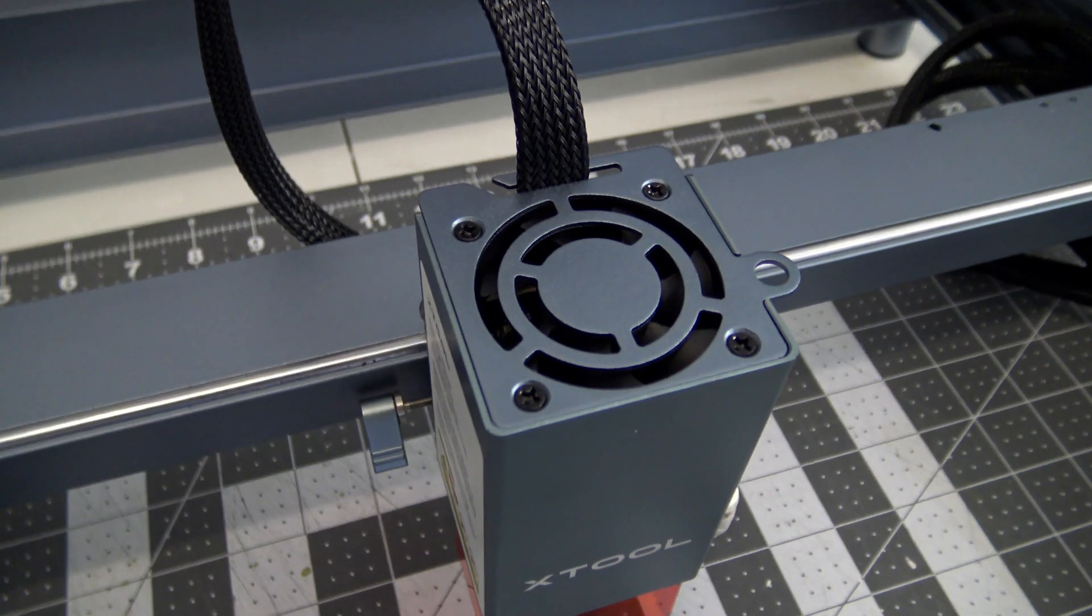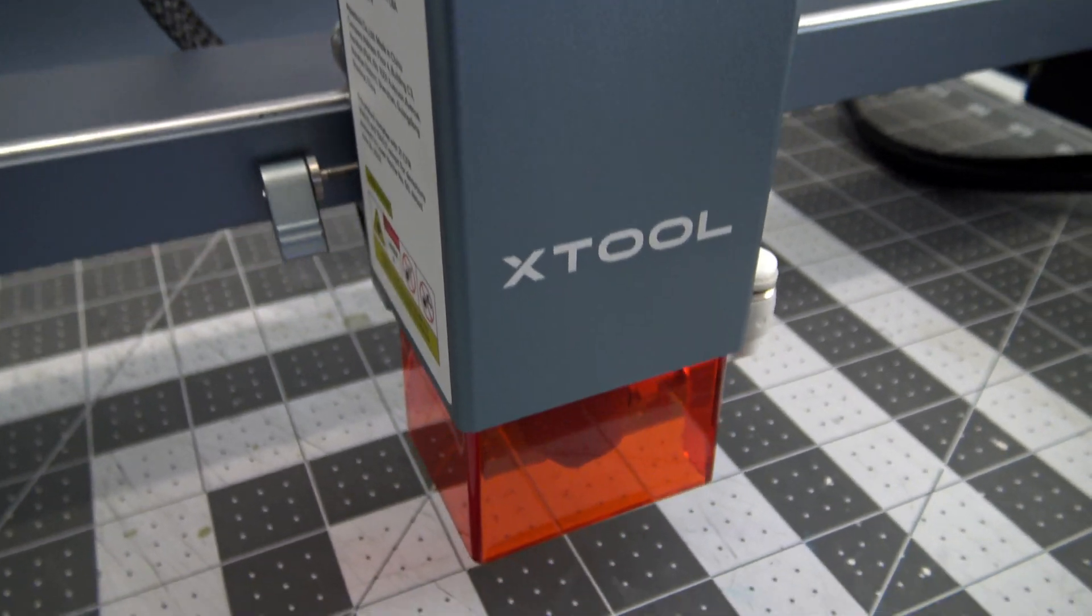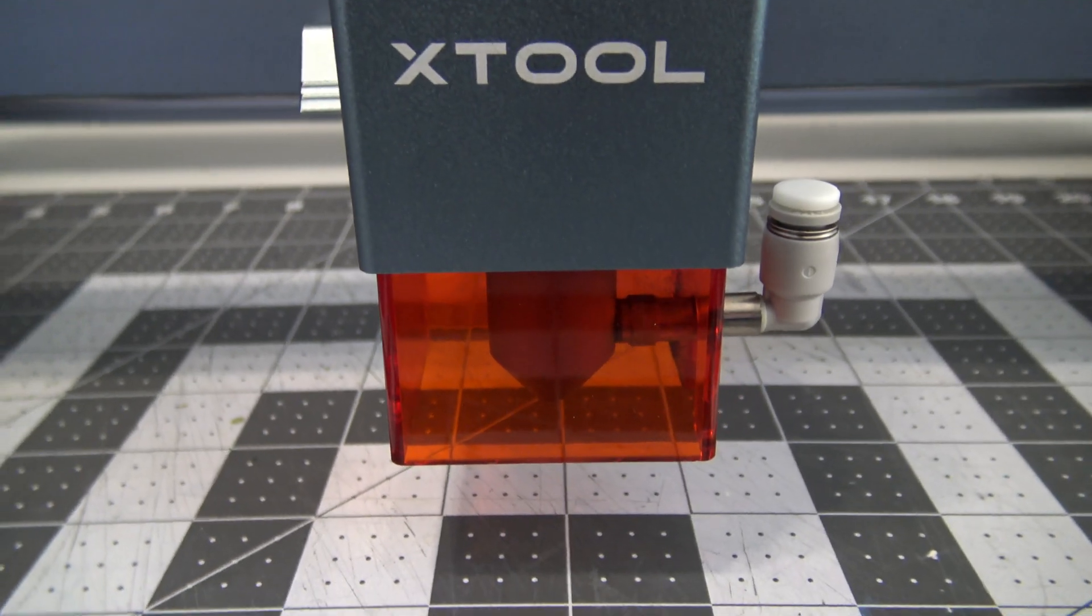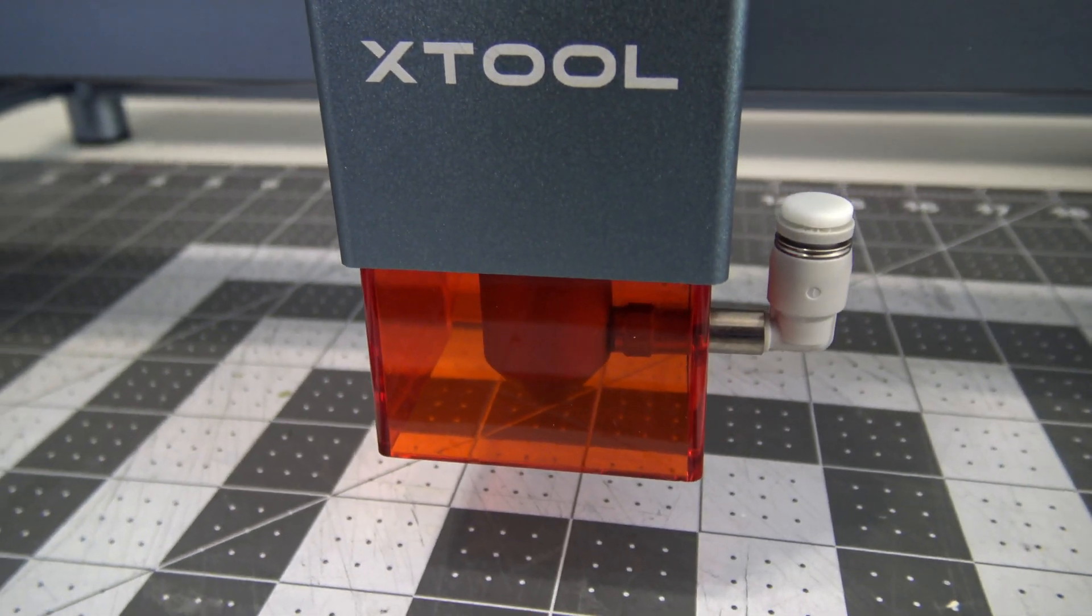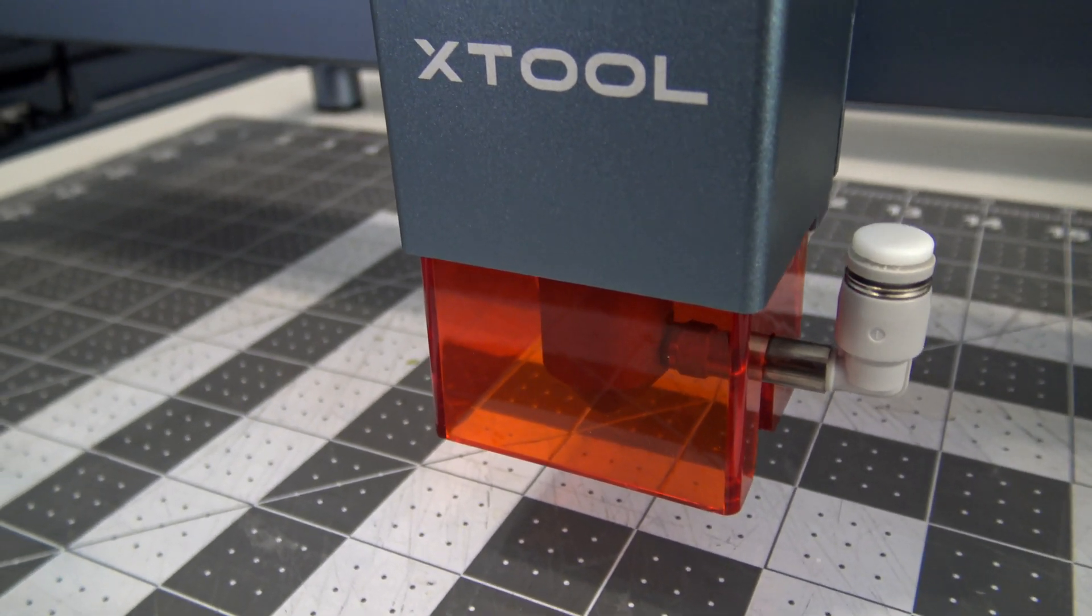On top of the laser module is a powerful cooling fan, which blows air down through the module to not only keep the laser cool, but also acts to blow smoke away while engraving. The fan does an excellent job at clearing smoke. The laser nozzle has air assist attachments built in, but you'll need to purchase the compressor separately if you want to enable air assist.